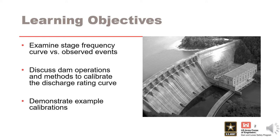The objectives of this lecture are to discuss the calibration of the RMC-RFA stage frequency curve to historic events. This includes examining the stage frequency curve and determining if adjustments need to be made to the discharge rating curve used in the reservoir routing. We will also briefly discuss various dam operations and methods to calibrate the discharge rating curve, then step through an example calibration for a project.